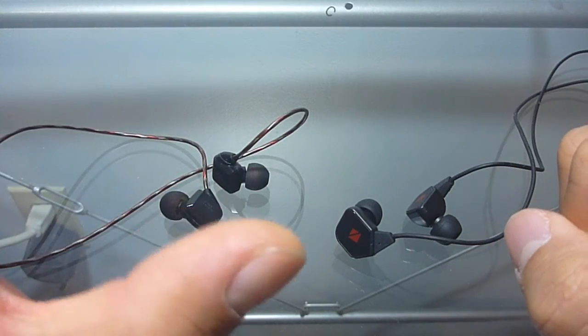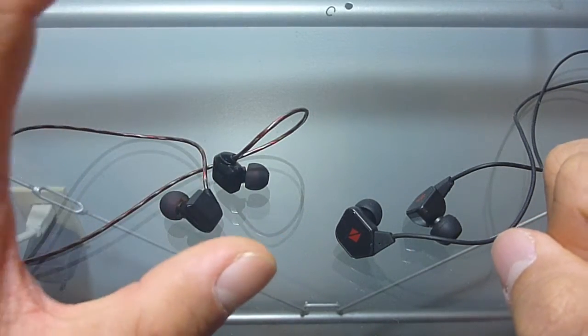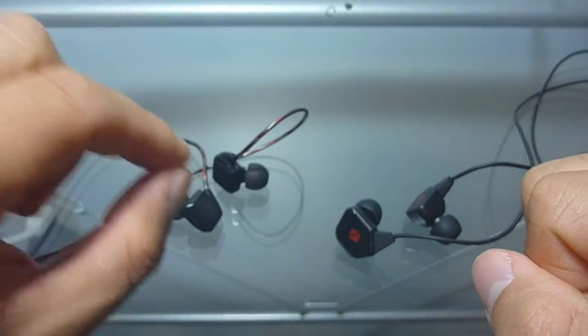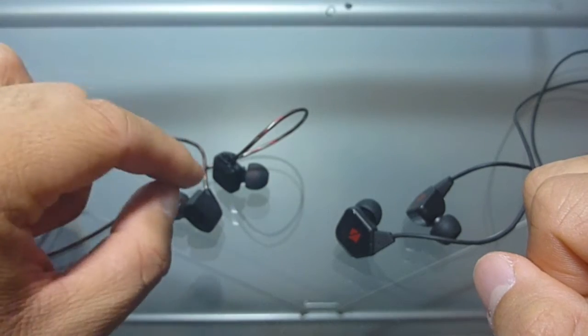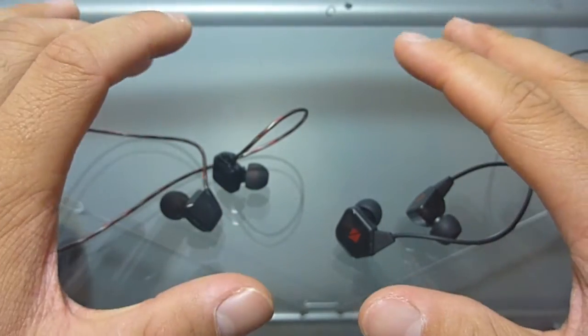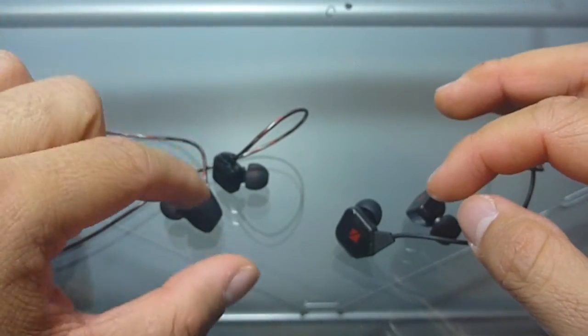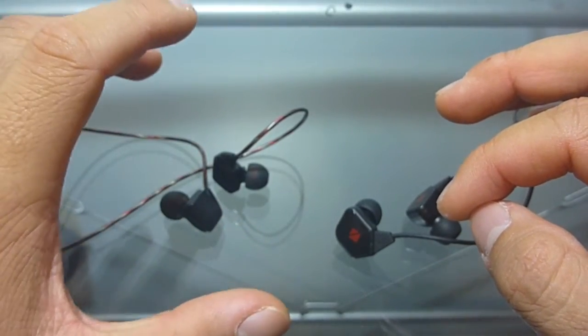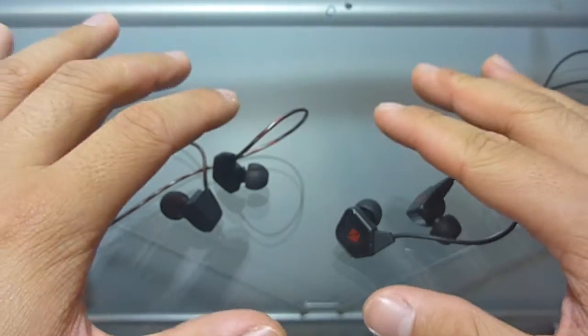in terms of the bass, I think the vSonic GR07s are definitely much more bassier compared to the Havi earphones. Now just because it's the bass edition versions that I have here does not make this a bass head earphone because that is totally not true. These earphones are definitely bassier than neutral but it's not that much bassier than that and I'll leave it at that.